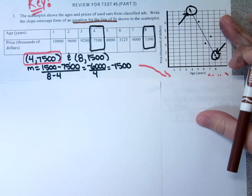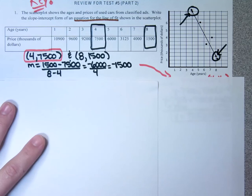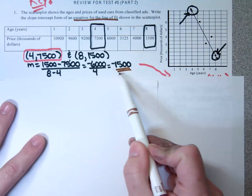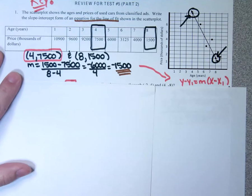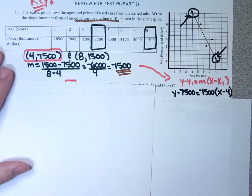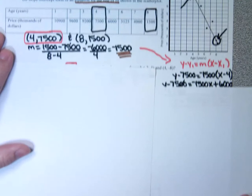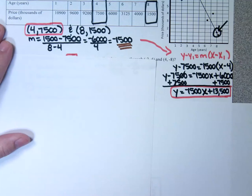So first thing I do is find my slope, following my formula: y2 minus y1 over x2 minus x1. Once I get my slope, I pick the point I want to use — I decided I was going to use the point (4, 7500). Then I put my equation in point-slope form, distribute my negative 1,500, and add 7,500 to both sides. And this is the equation for my line of best fit.